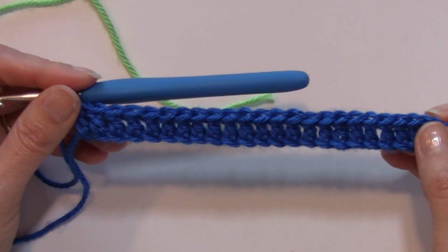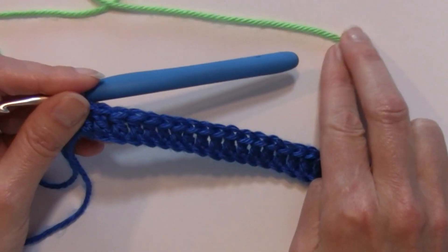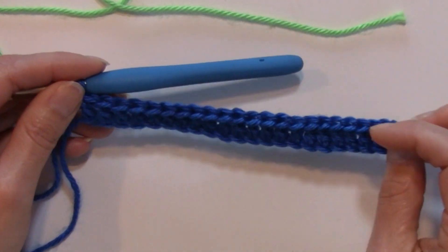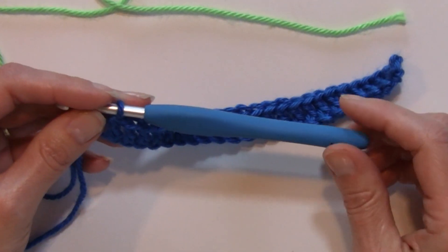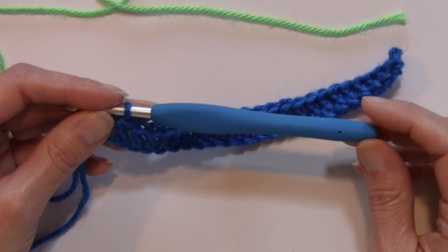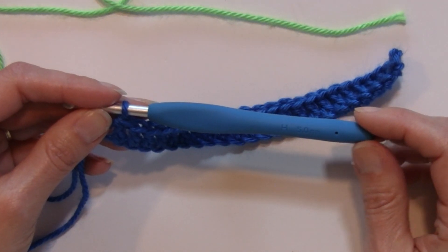We're using here a couple of different colors to contrast in Caron Simply Soft that I had on hand and I'm using a Clover crochet hook size H 5.0 millimeter.